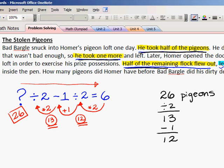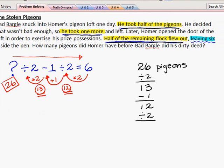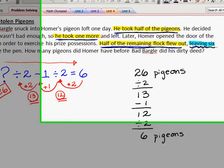When Homer came and opened the door, remember that half of the flock flew out, so we would divide that number by two. And that tells us that there are six pigeons left, and if you recall, the problem did mention that there are six pigeons left.